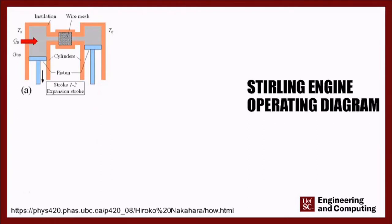As this thing starts to isothermally and reversibly expand, the cylinder on the left-hand side starts to go down, and that pushes on the flywheel. The flywheel is how we're going to generate power. As the flywheel turns, the other piston — also connected to it — reaches a point of maximum volume that it could possibly expand to.